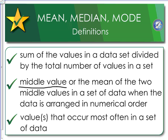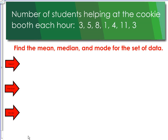If we are looking at this set of data, we have the number of students helping at the cookie booth each hour: 3, 5, 8, 1, 4, 11, and 3. Our first job whenever we have a set of data is to put it in order from least to greatest.